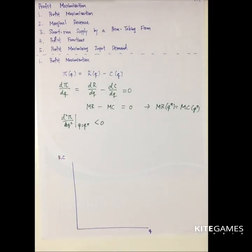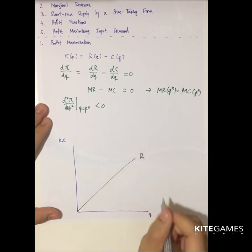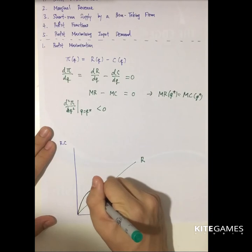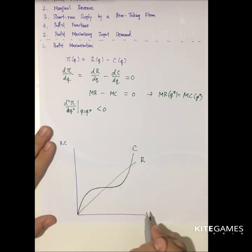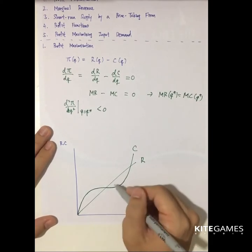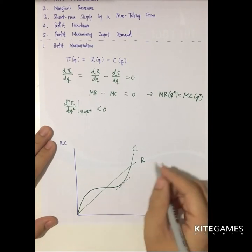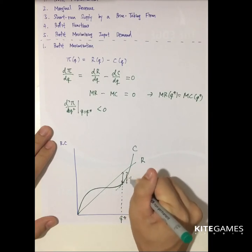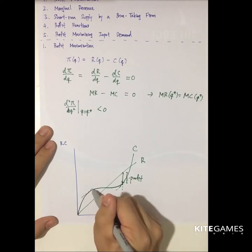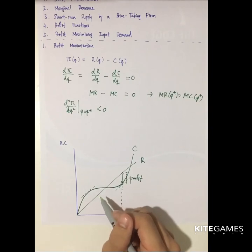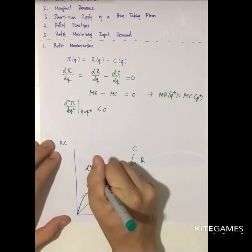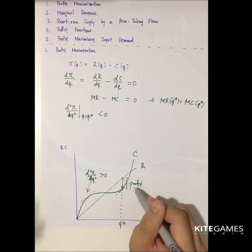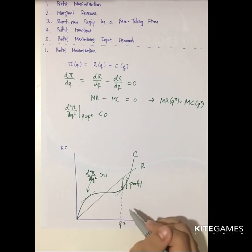The sufficient condition is that the second order condition is less than zero. Diagrammatically, we assume that the revenue is a straight line — price is unchanging, so marginal revenue is constant and revenue is linear. The cost has a typical curved shape. The profit maximizing point is where the slope of revenue equals the slope of cost. At another point where the slopes are also equal, the second derivative is bigger than zero, so that is not the maximizing point. Only where the second derivative is negative is the true profit maximizing point, and the vertical distance between revenue and cost is the profit.